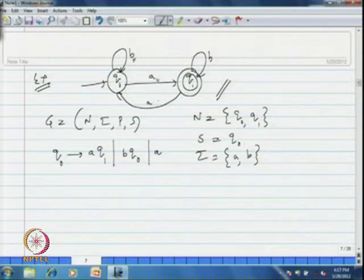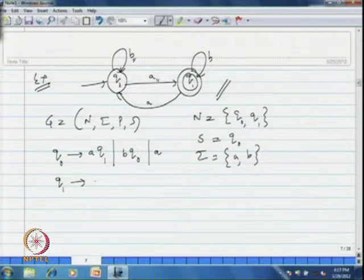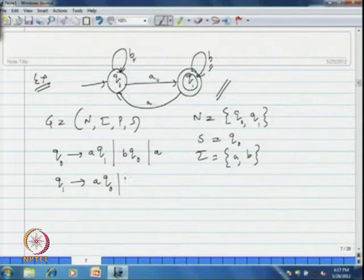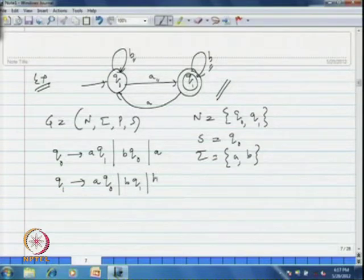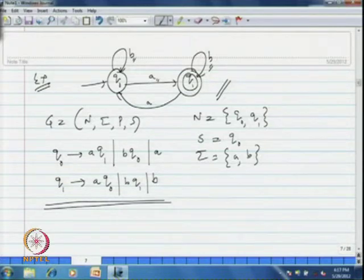Similarly, for q1, considering all its transition moves: q1 on a goes to q0, therefore q1 goes to a q0 is a production. q1 on b goes to q1 again, so q1 goes to b q1 is a production. And since q1 on b goes to q1 and q1 is a final state, therefore q1 goes to b must also be a production. So these are all possible productions for this grammar, and this is the equivalent regular grammar corresponding to this DFA.